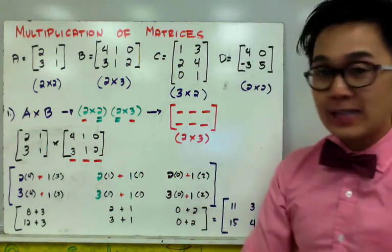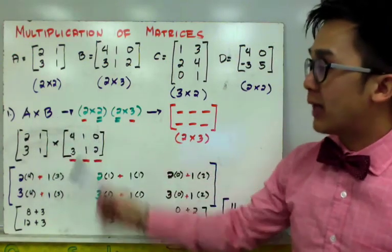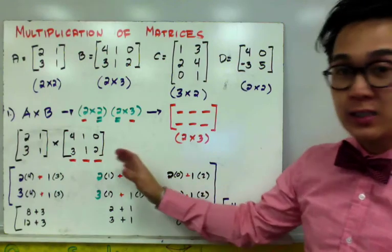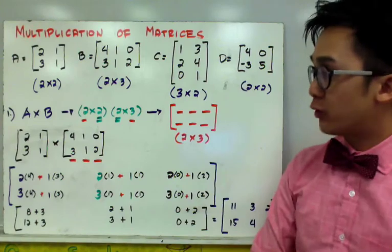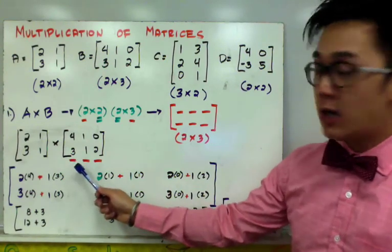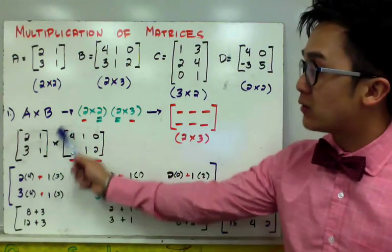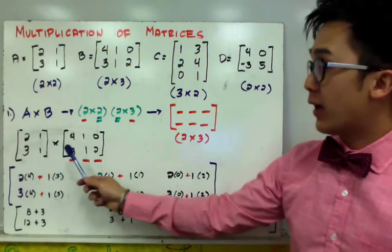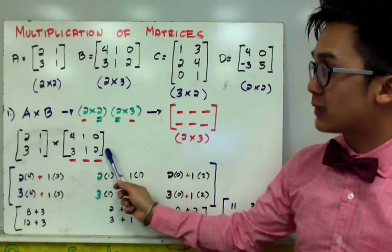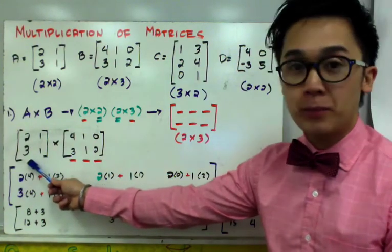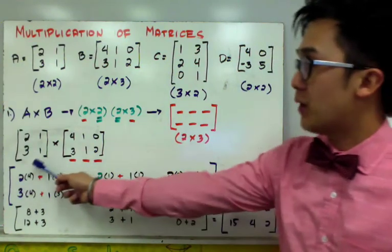For the steps in actually multiplying matrix A and matrix B, it will be a little bit complex, so you need to be patient. Here's the first step: count the number of columns in your second matrix. It is the second matrix that you need to count the number of columns. Since we have 1, 2, 3 columns in the second matrix, that means we're going to copy the first matrix three times — three sets of matrix A.